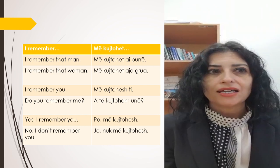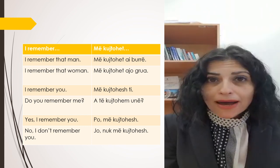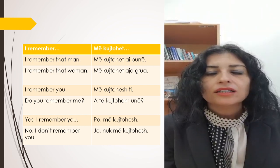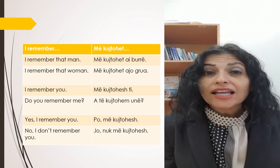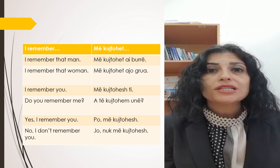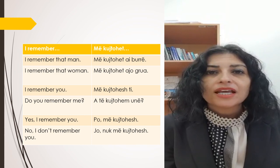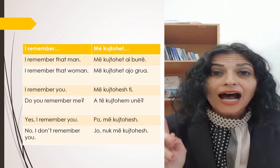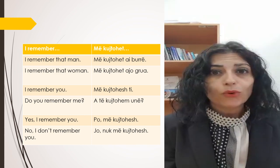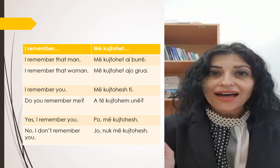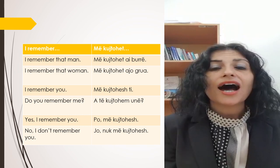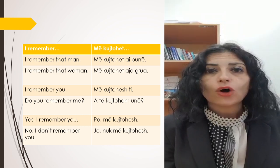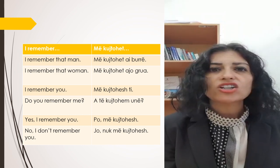if you want to say 'I remember that man', in Albanian language you will say: 'më kujtohet ai burrë'. That man is 'ai burrë', and 'më kujtohet' does not change.